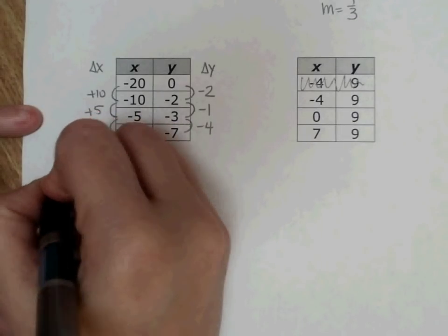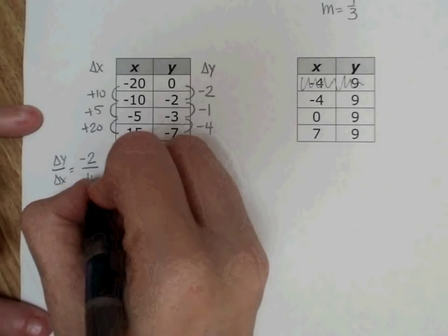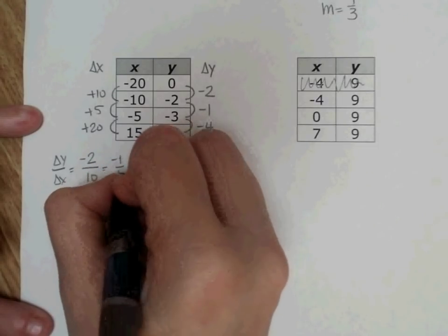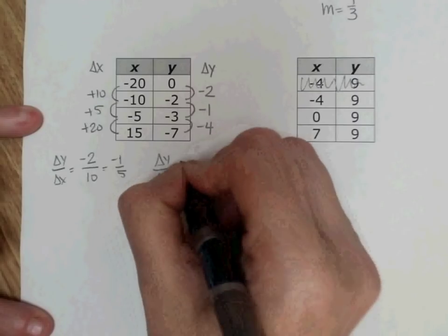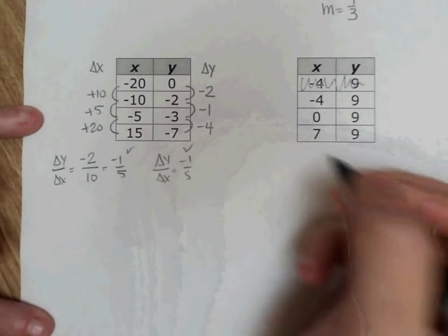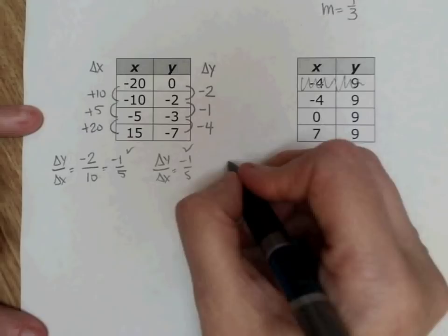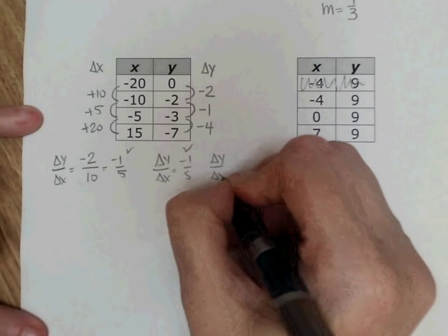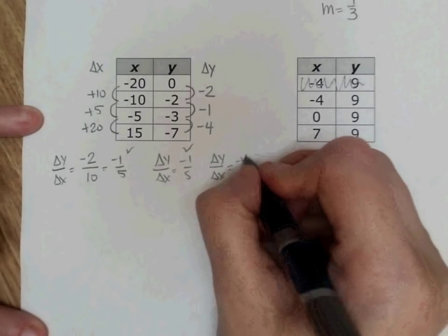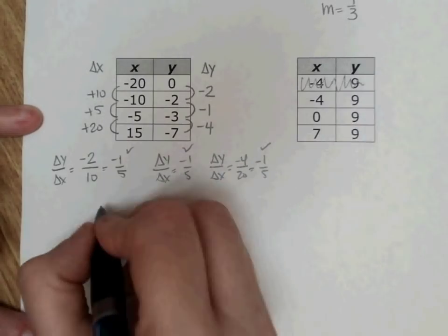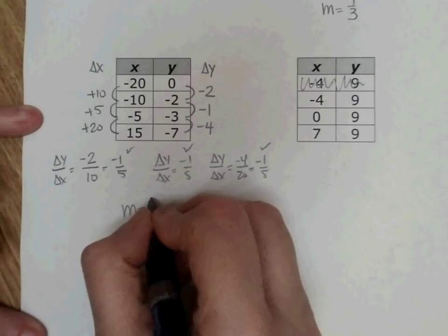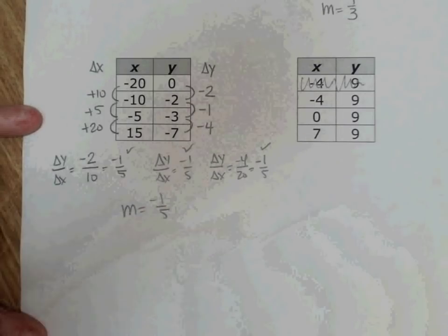Delta y over delta x is negative 2 over 10, which reduces to negative 1 fifth. My second delta y over delta x is negative 1 fifth, so I'm feeling pretty good about this. Let's look at the third one. It is negative 4 over 20, which reduces to, hey, guess what, negative 1 fifth. Since they're all the same, my slope is negative 1 fifth.